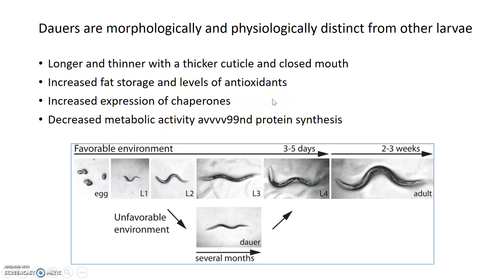Additionally, in terms of genetic changes, dauer larvae increase their expression of molecular chaperones, which enhance protein folding and prevent proteins from misfolding. In exposure to high stress, proteins might misfold, so one of the ways dauers become resistant to stress is by having a large number of chaperones around to keep those proteins intact and functional. Dauers are also able to decrease their metabolism, which makes sense since they're not eating, and they decrease their protein synthesis, which is a pretty resource-intensive process. They sort of turn down these physiological activities in order to withstand the stress over a long period of time.